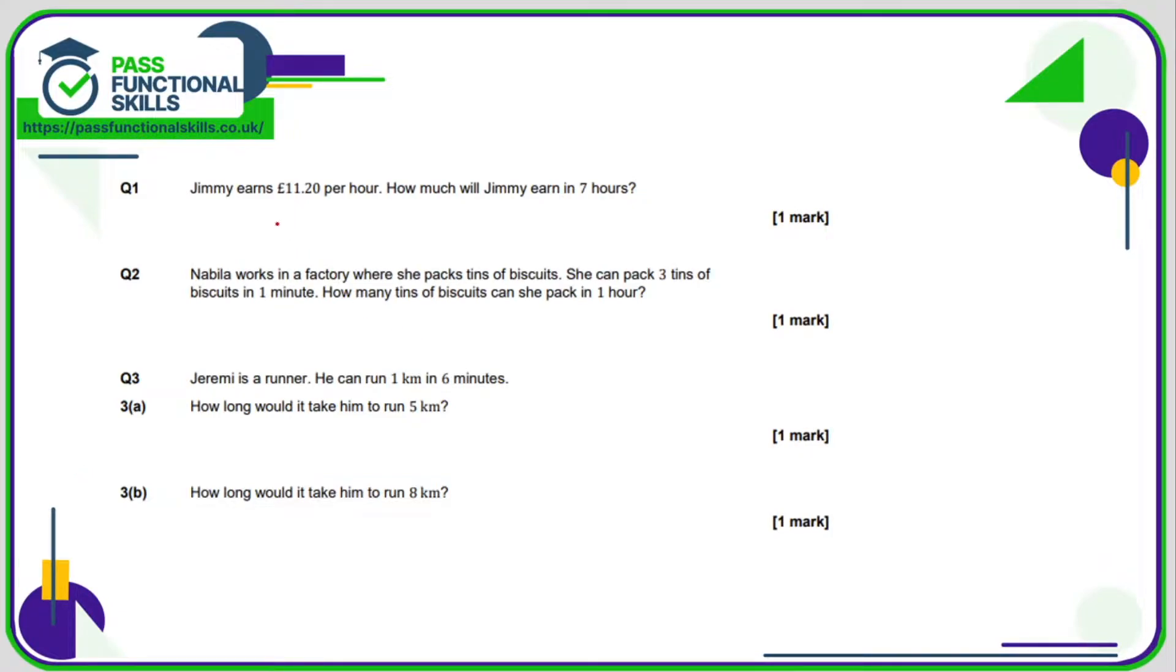Question number 1. Jimmy earns £11.20 per hour, so how much will he earn in 7 hours? Well the calculation is simply £11.20 multiplied by 7. On the calculator you can type in 11.2 or 11.20 times 7. Then the calculator will say £78.4 and you'll just need to turn that into £78.40p.